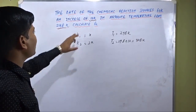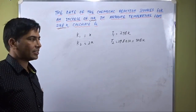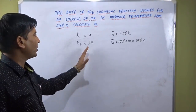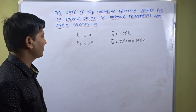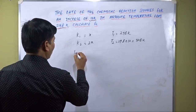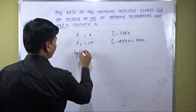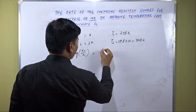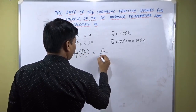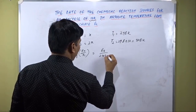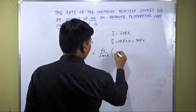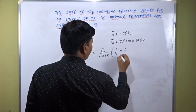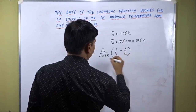The question asks us to calculate activation energy. We apply the Arrhenius equation which relates the rate constant and the temperature. The formula is: log(k2 / k1) = Ea divided by 2.303, where R is the gas constant, multiplied by the bracket (1/T1 minus 1/T2), where T1 is the initial temperature and T2 is the final temperature.